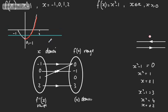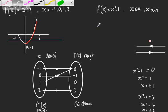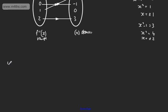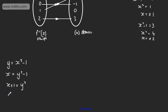Let's find the inverse function. We say y equals x squared minus 1, swap to get x equals y squared minus 1, and make y the subject. So x plus 1 equals y squared. When we square root both sides we generally get plus or minus, but for this to be a function we take the positive root. So f⁻¹(x) is the positive square root of (x + 1).